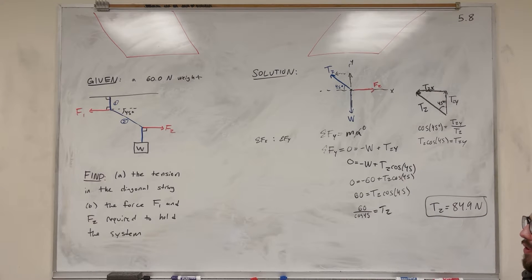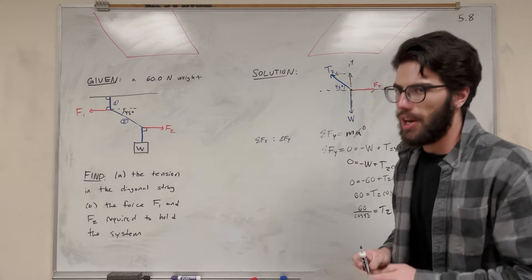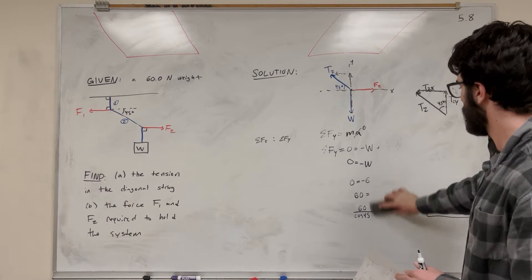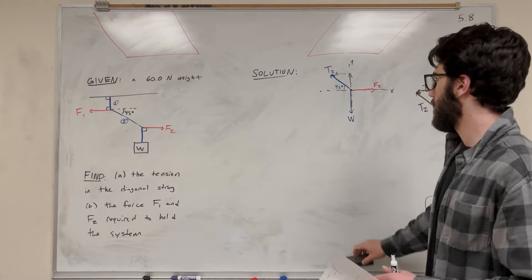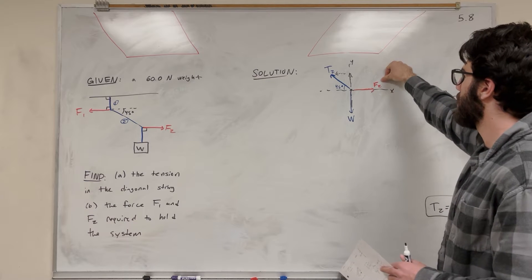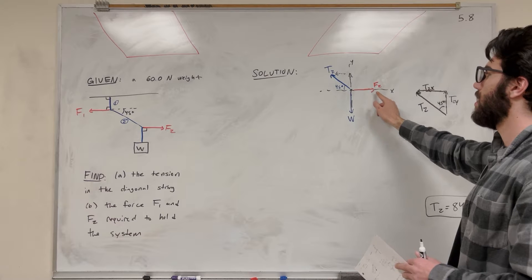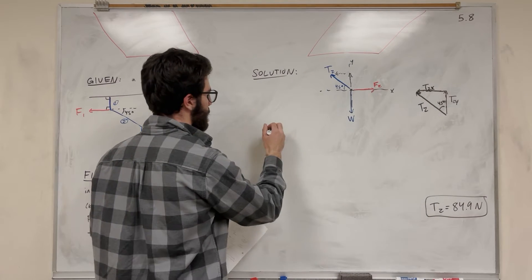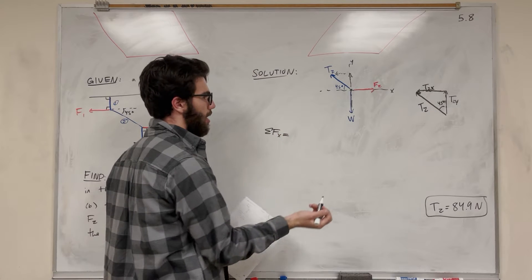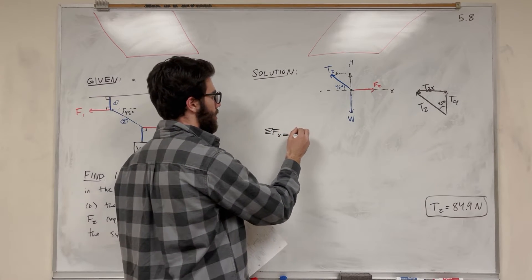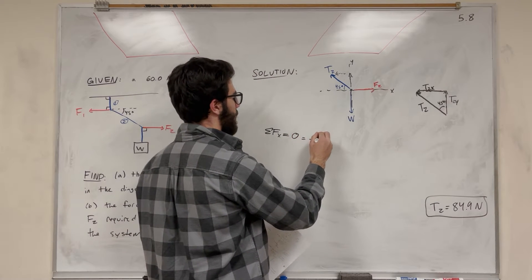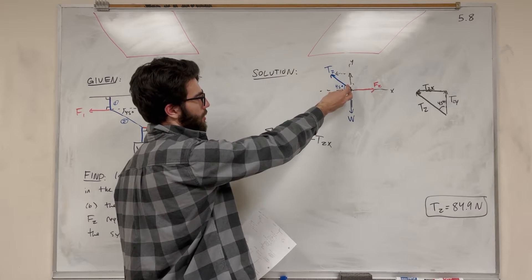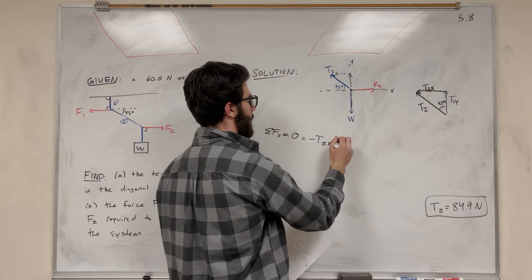Now let's move on to part B — finding F1 and F2. It's going to be a similar process. We're going to keep this force body diagram because we're trying to find F2. We chose sum of forces in Y to not include F2, but now that we know T2, we can solve for F2 using sum of forces in X. Sum of forces in X equals mass times acceleration, but we're not moving so acceleration is zero. It's going to be negative T2X — because T2 is pointing backwards in the X direction — plus F2.